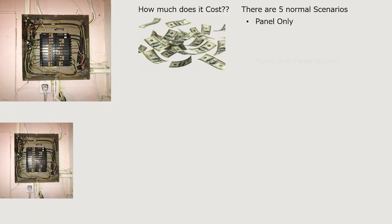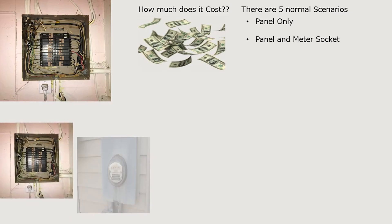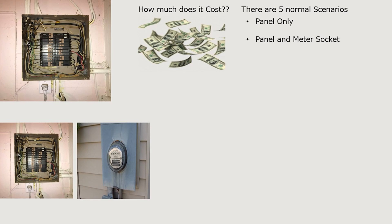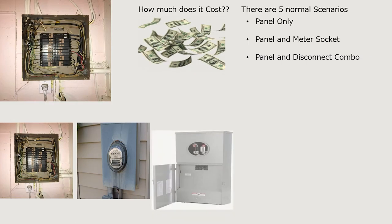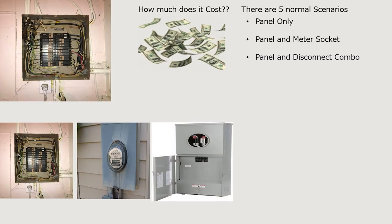The five situations: one is the panel only — we come into your home and change the panel only. Number two, we change the panel and the meter socket. When I talk about meter socket, I'm not talking about the little glass part your utility company owns — I'm talking about the outside actual meter box. Sometimes we have to put in a panel meter disconnect combo, which has a place for the meter but also has a breaker right underneath it for your main house disconnect.